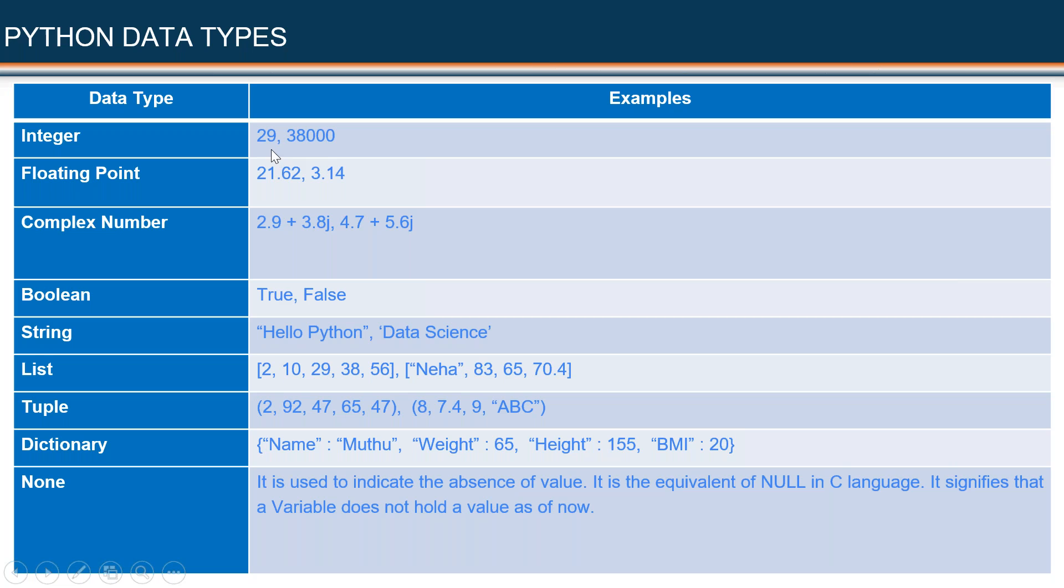When I want to talk about my age, I will use the integer data type. On the other hand, when I want to talk about my height or weight, I will make use of the floating point data type.